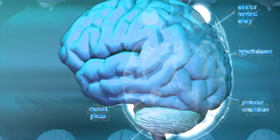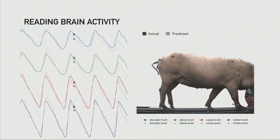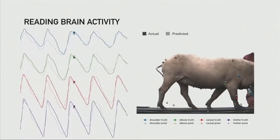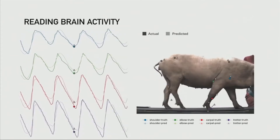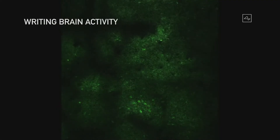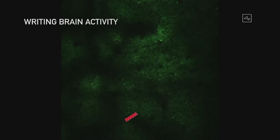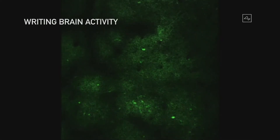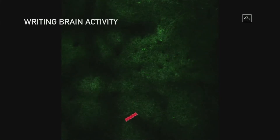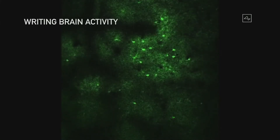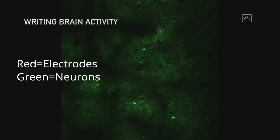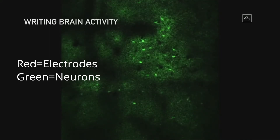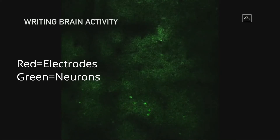This chip detects big brain activity and is accurate in detecting the movements of the pig. In this video clip, the red flashing things are the electrodes firing, and the green are the neuron bodies responding to the current from the electrode.